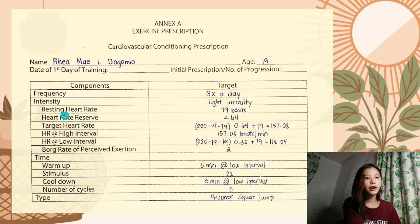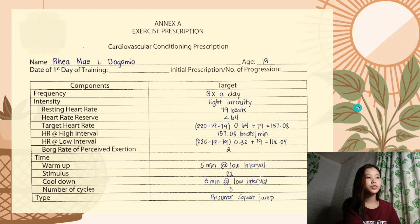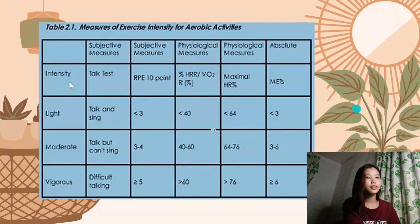Next is resting heart rate. My resting heart rate is 79 beats per minute. I got this by checking my pulse early in the morning after waking up. Next is heart rate reserve.